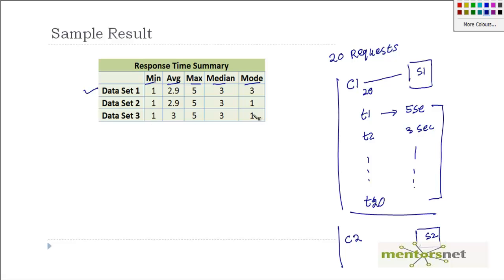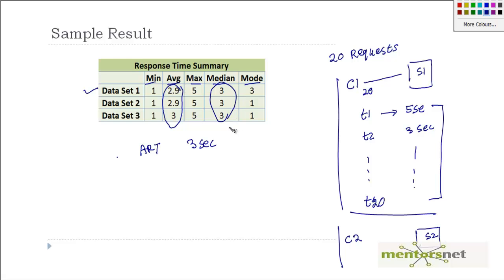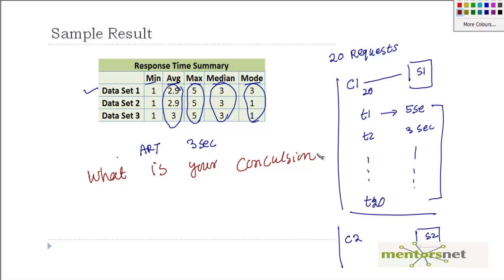This is for set 1, similarly for set 2, and another set for set 3. This is the summarized data that you are seeing. Here's a question — what is your conclusion? Our response time target, whenever we set the performance exit criteria, is that the average response time should be below 3 seconds. If that is the case, don't you think all these results are good? All of them have an average time below 3 seconds, and the median is also 3 seconds and mode is also less than 3 seconds. So what is your conclusion — do all 3 results satisfy the performance acceptance criteria of average response time less than or equal to 3 seconds?